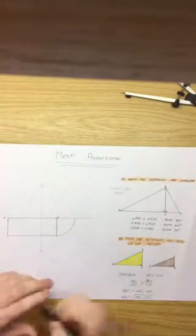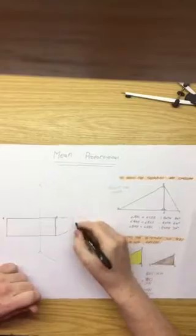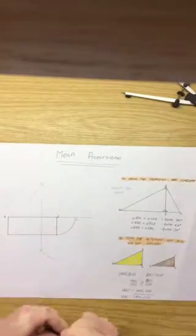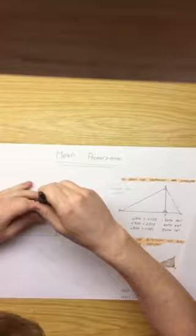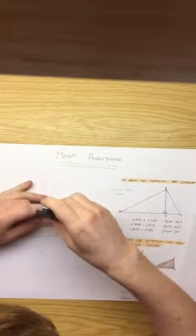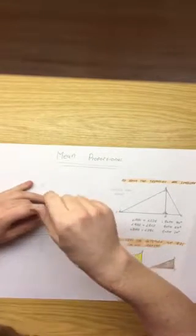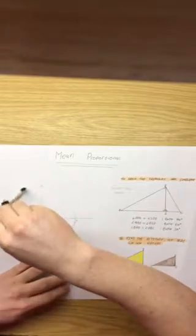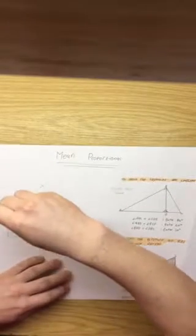We should call this point here point C. We then scribe an arc from C over to A.